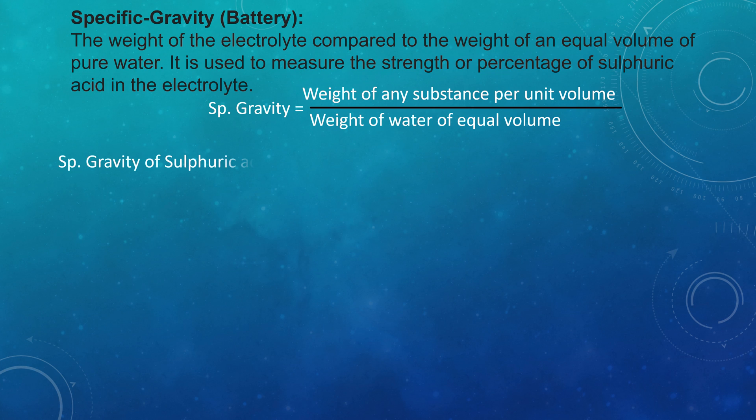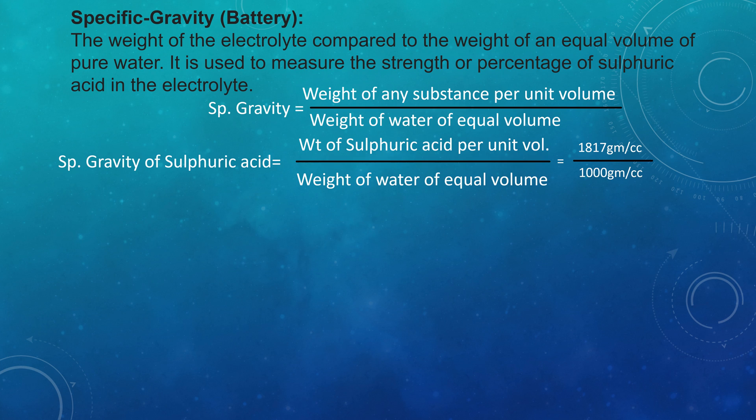Specific gravity of sulfuric acid equals weight of sulfuric acid per unit volume divided by weight of water of equal volume. Specific gravity equals 1.817 gram per cc divided by 1.000 gram per cc, which equals 1.817. Therefore, specific gravity of sulfuric acid is 1.817, 98% pure. Being the ratio of two equal units, specific gravity has no unit.